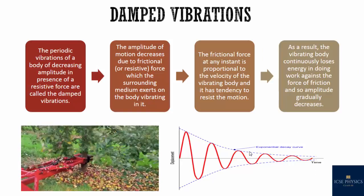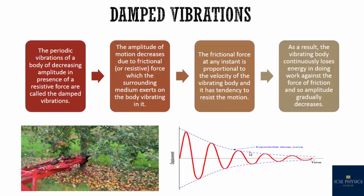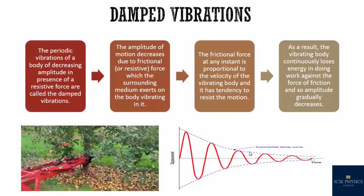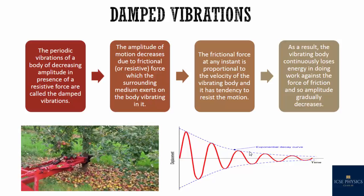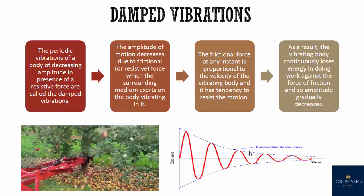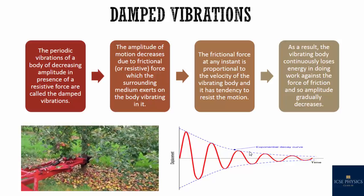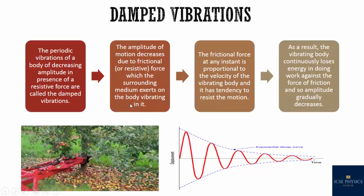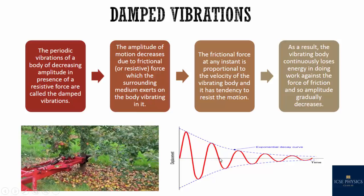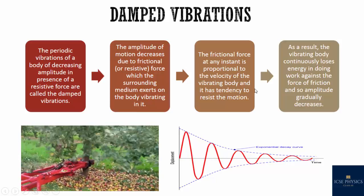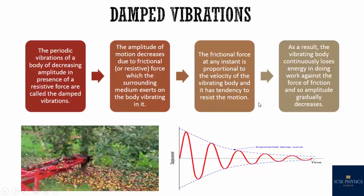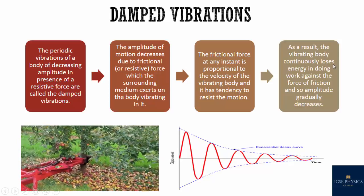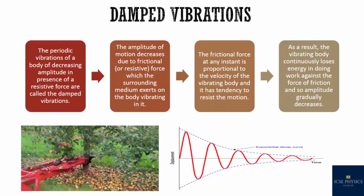Damped vibration: the periodic vibration of a body of decreasing amplitude in the presence of a resistive force is called damped vibration. Earlier we studied free or natural vibration, but that was just a theoretical case. Damped vibration is all around us — even a pendulum that starts vibrating ultimately comes to a stop due to frictional forces of the air. The amplitude of motion decreases due to friction that the surrounding medium exerts on the vibrating body. The frictional force at any instant is proportional to the velocity of the vibrating body and resists the motion, so the body continuously loses energy and amplitude decreases with time.